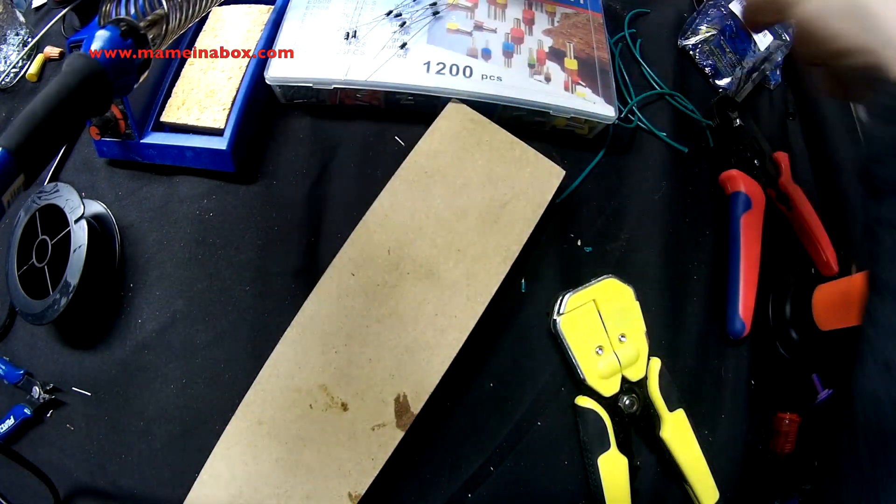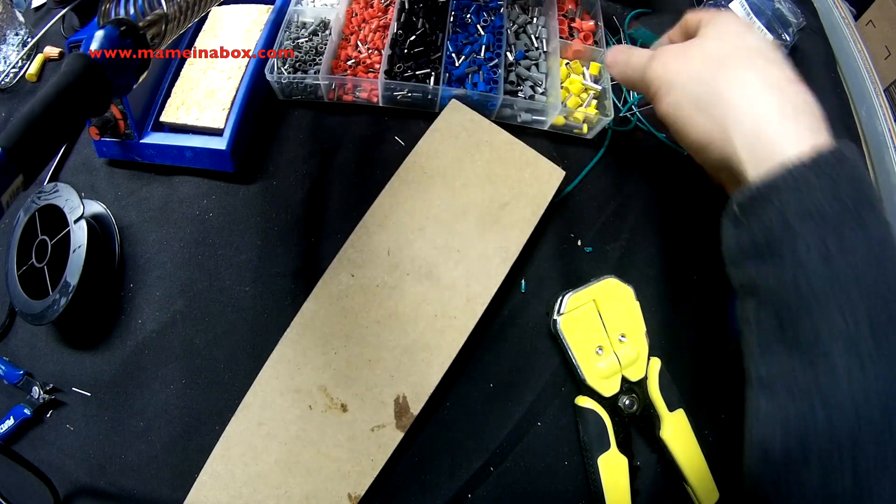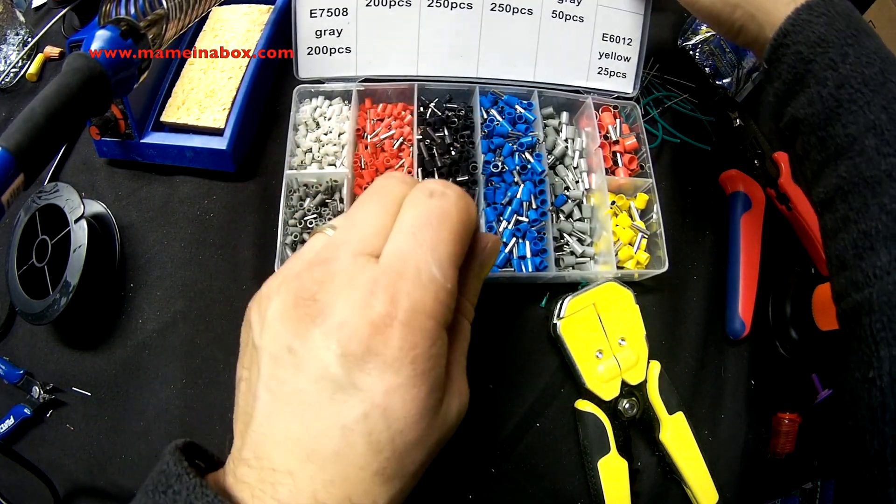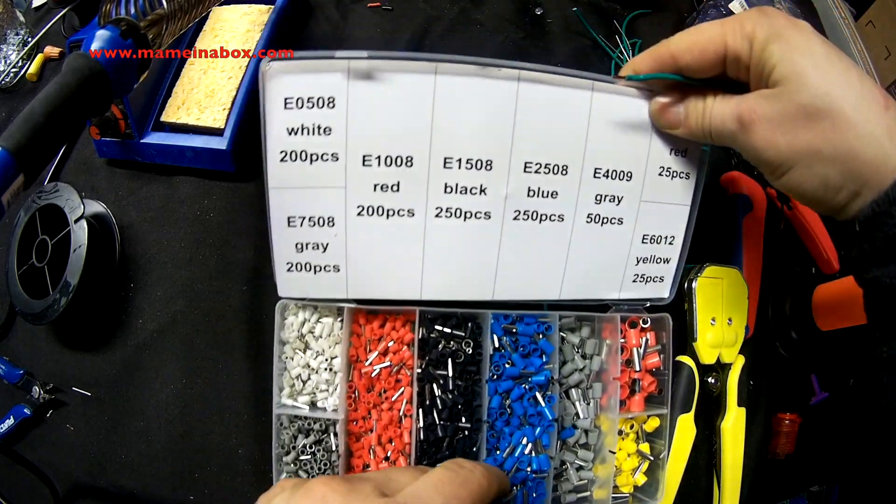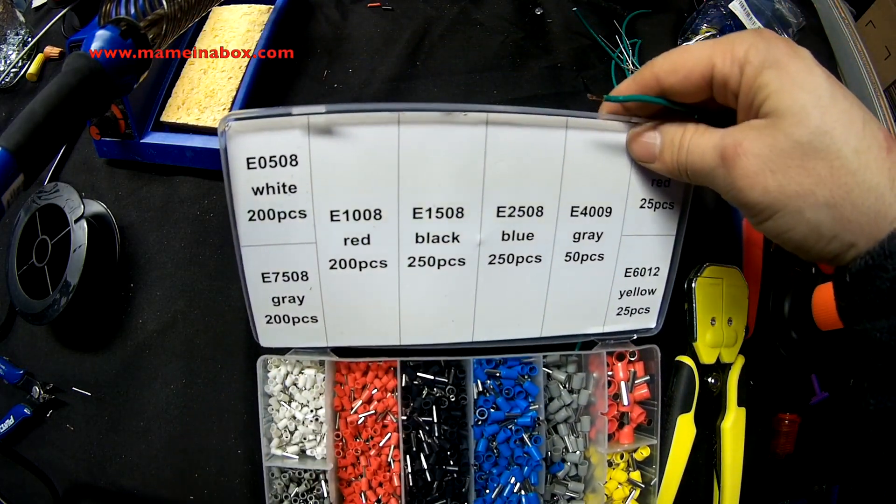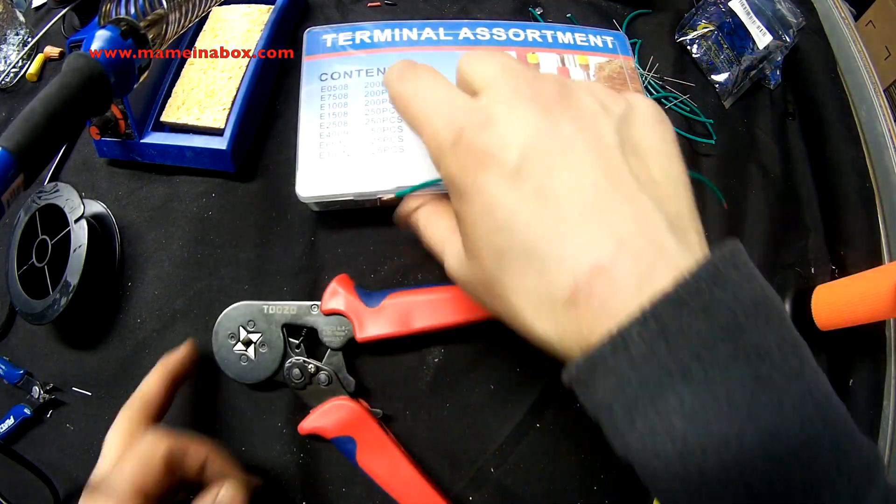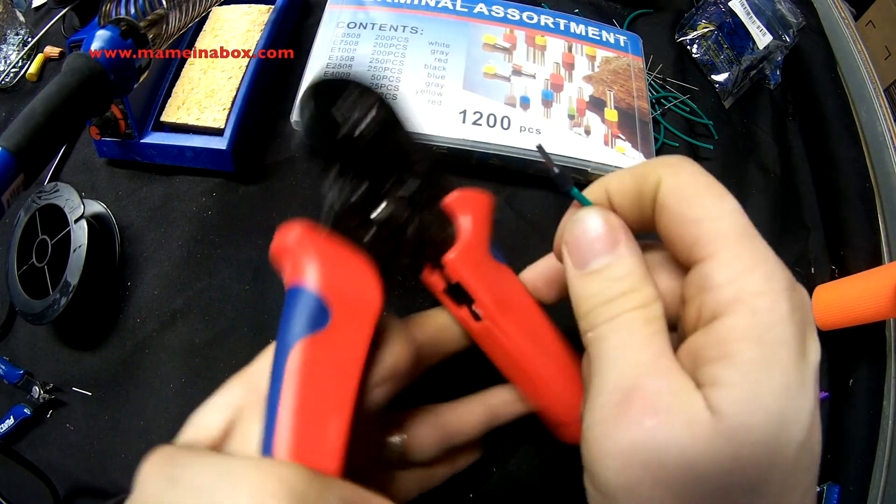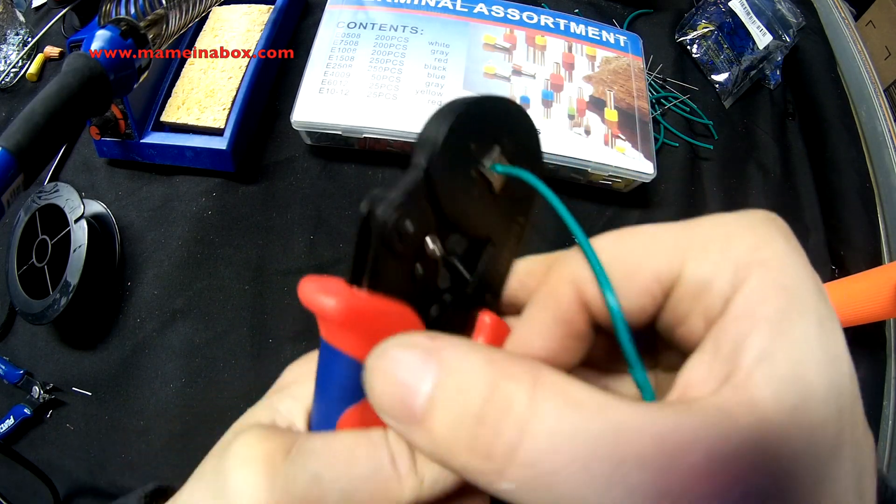So on both ends of the cable, we're going to put an end piece connector. There are different sizes. The one we're going to use is the E1508. That's the right size for our contactor. And we're going to insert the end piece, get our crimper, and just crimp them in place.